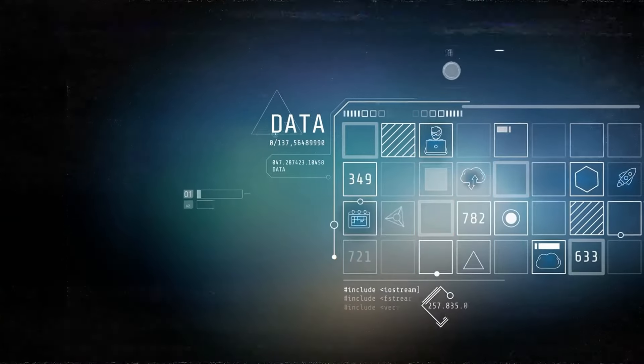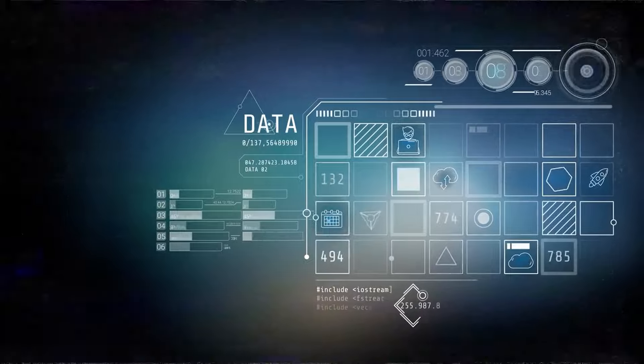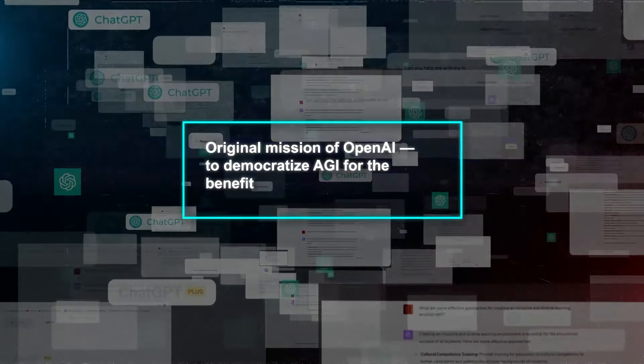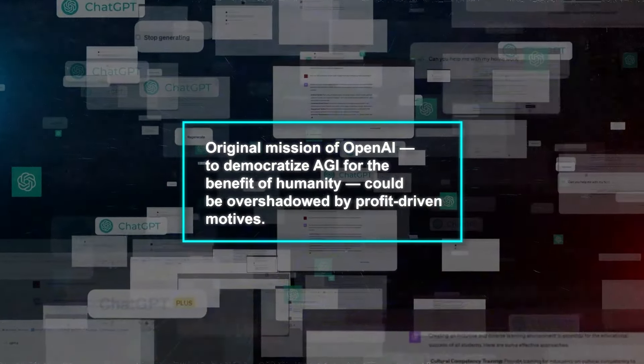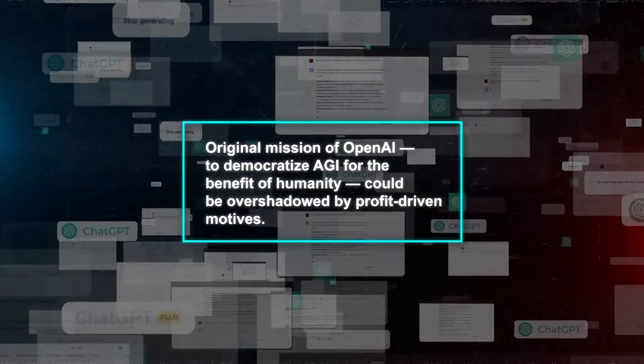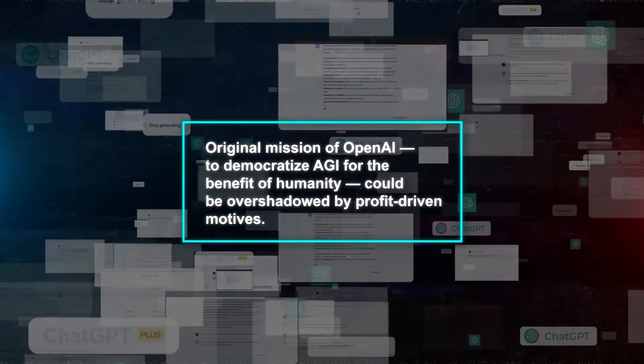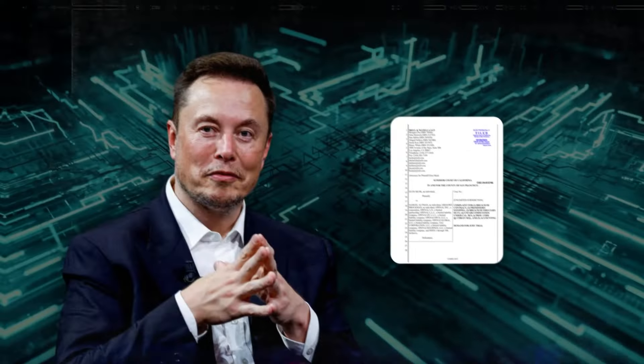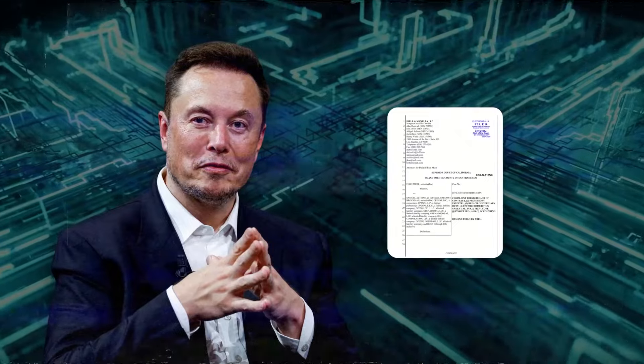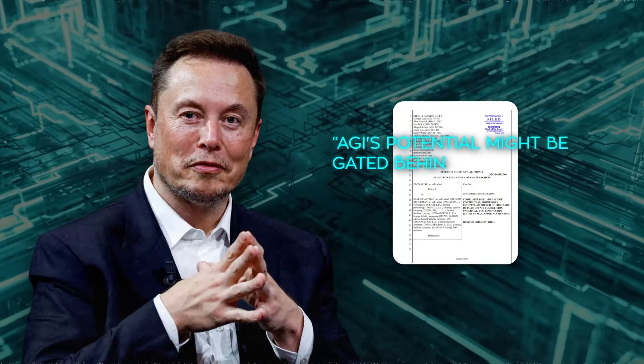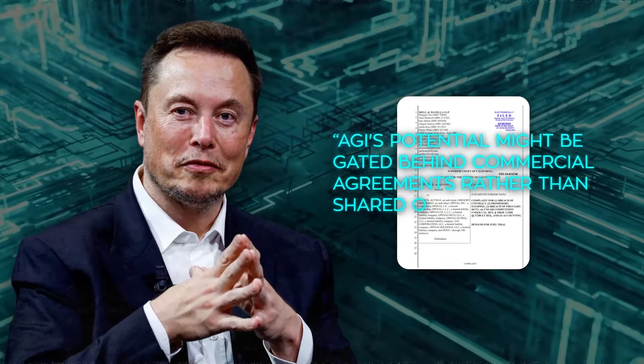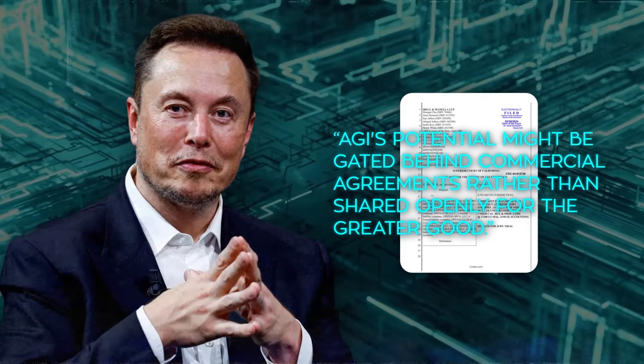With Microsoft's vast resources and commercial interests at play, there's a real worry that the original mission of OpenAI, to democratize AGI for the benefit of humanity, could be overshadowed by profit-driven motives. This dynamic is at the heart of Musk's lawsuit, highlighting fears that AGI's potential might be gated behind commercial agreements rather than shared openly for the greater good.